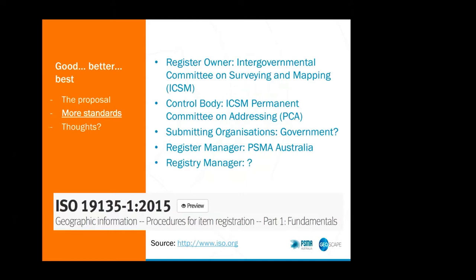Some of those standards — the code lists — have been reduced because the main standard they use is one about new addresses. That doesn't consider some of the legacy ones. They want to try and reduce the number of codes used for new addresses, so that list has come down to 15, or a very small number of codes. But that's not the whole in-use picture. The in-use codes are now being sought from PSMA because we have the largest and most considered-complete data set of those.